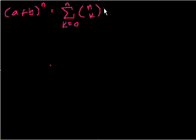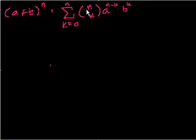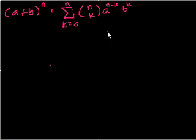times b to the k. So each term, the n stays constant, but each term you start at k equals 0 and you keep incrementing up. And we did an example to solve a plus b to the fourth power in the previous video. And as you saw, that was tedious, but less tedious than actually multiplying it out.